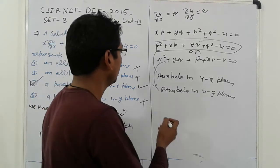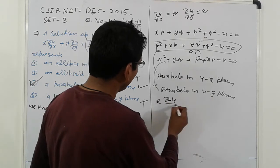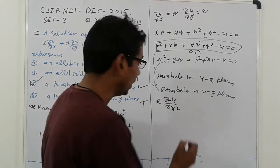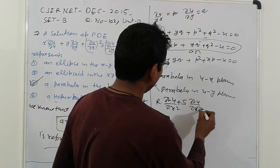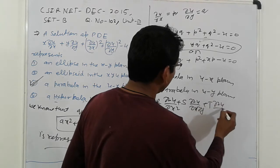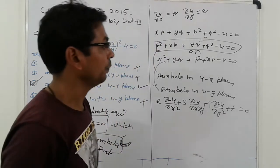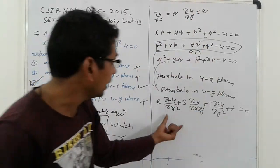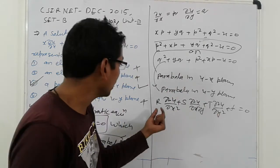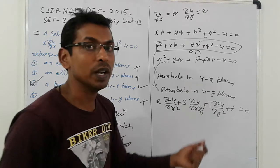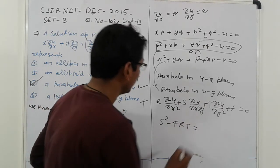Now next, we are going here that form: r del square u upon del x square plus s del square u del x del y plus t del square u del y square plus f of something equal to zero. That is the form.